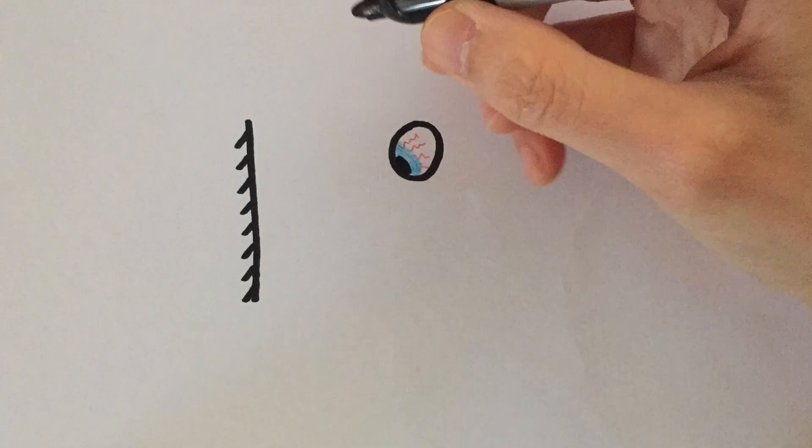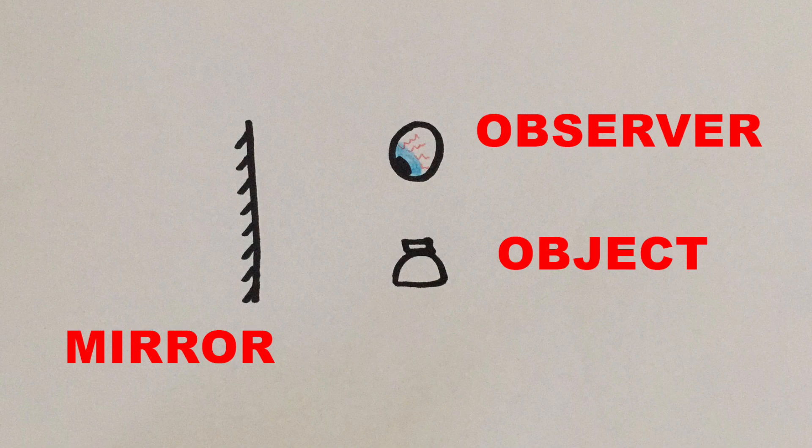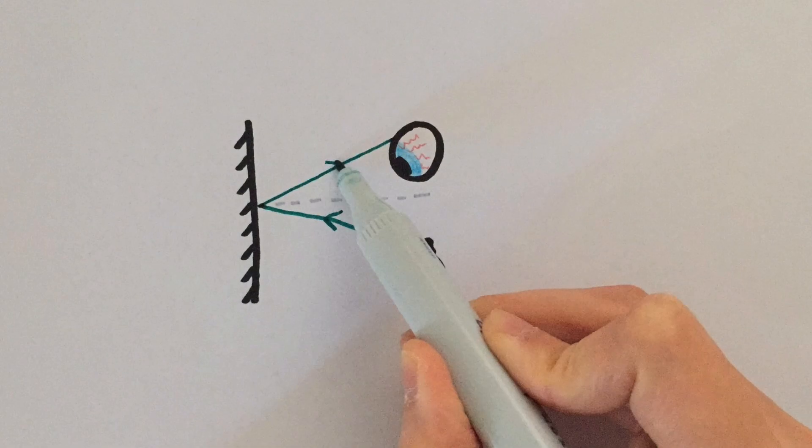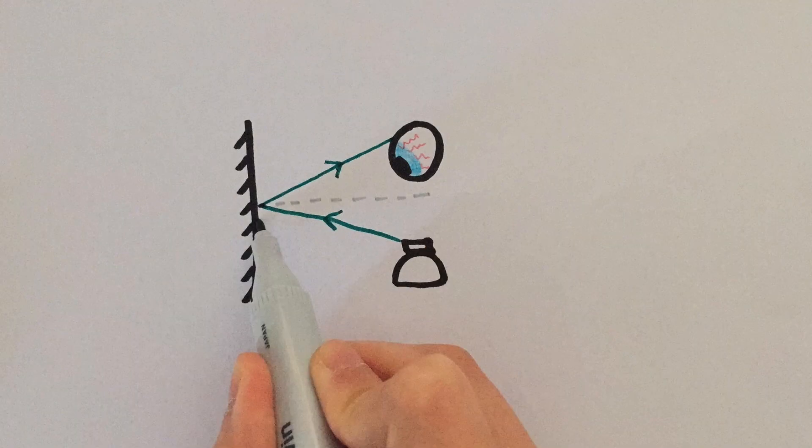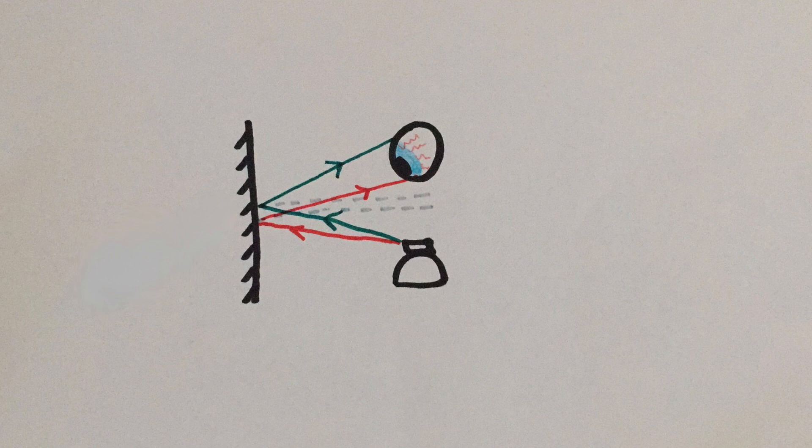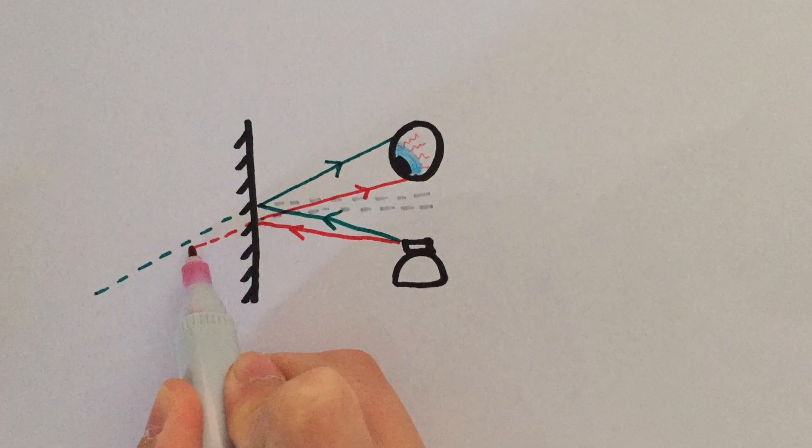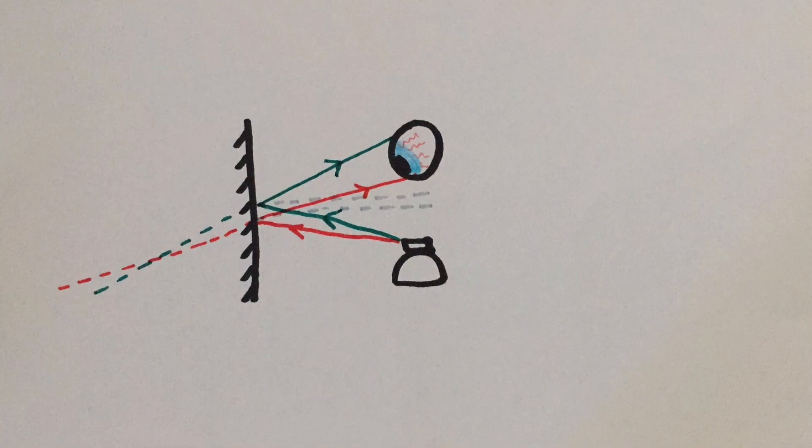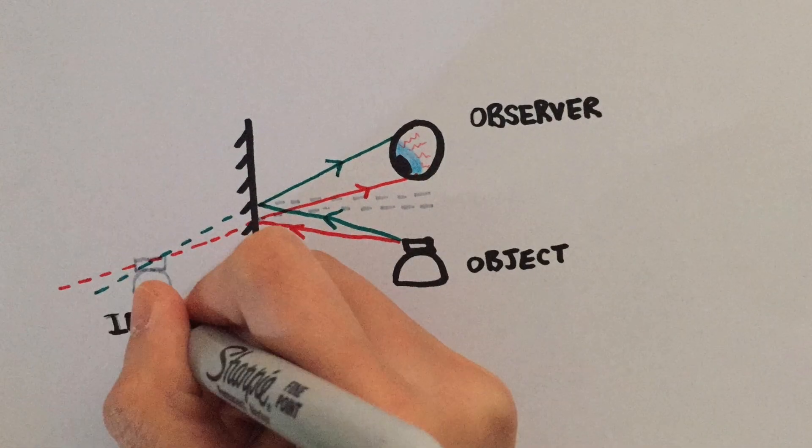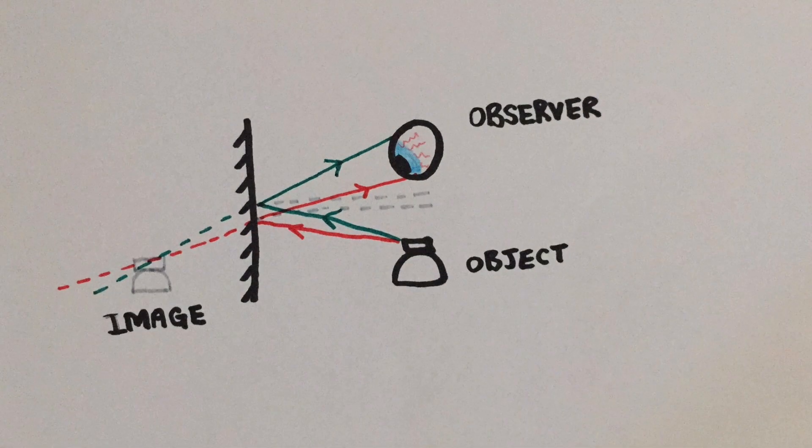Let's put a perfume bottle in front of our mirror and put our observer right next to it. Draw the first incident ray from the top of the perfume bottle reflected to the top of the eye. Then draw a second incident ray from the same point reflected to the bottom of the eye. Extend the reflected rays behind the mirror using dotted lines. Where the two dotted lines intersect is the position of the perfume bottle's image.